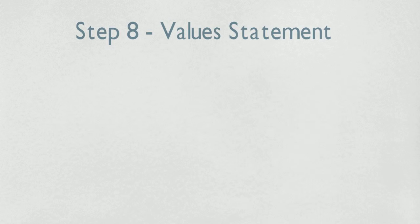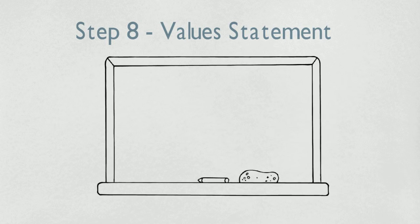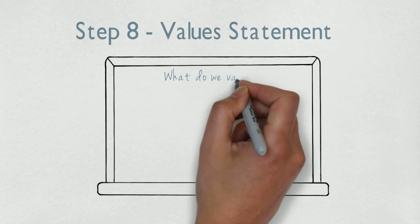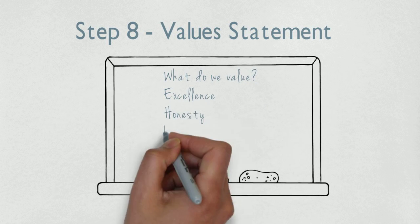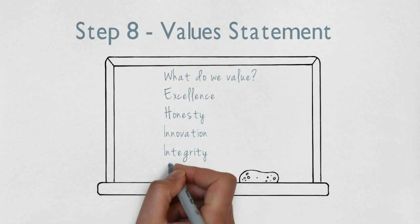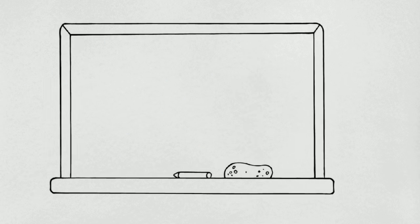Step number eight: create the value statement. Once there is a vision and mission statement, break the group into units again and allow some time to make a list of values. The word value is defined as a principle, standard, or quality considered worthwhile or desirable. Keep in mind these values will become principles the organization operates by. Ideally, a list of values should be five to ten words.